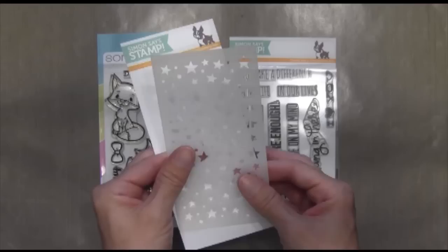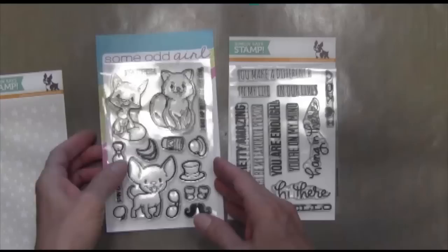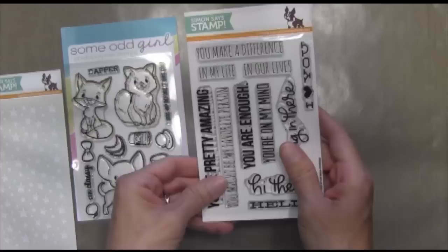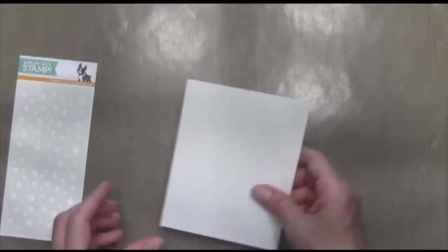These are the three main products I'm going to be using today. The first is a stencil by Simon Says Stamp called Stars and Dots. It's kind of a half size. I've got this Some Odd Girl Hipster Pets stamp set. I love the pets in this and I'm going to be using them a lot in the future. And then the Stripe Greetings, which I really love. I'm using the you're number one from this Simon Says stamp set.